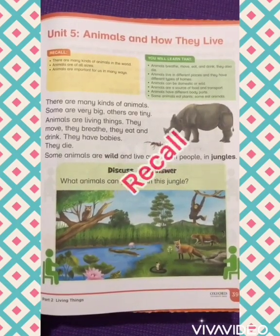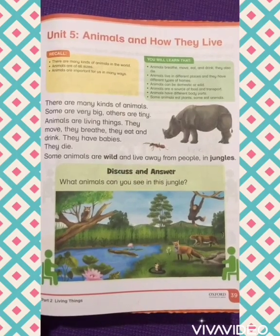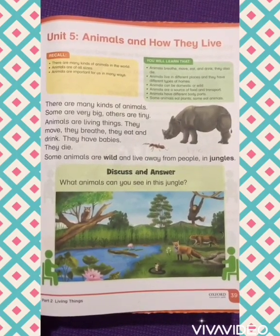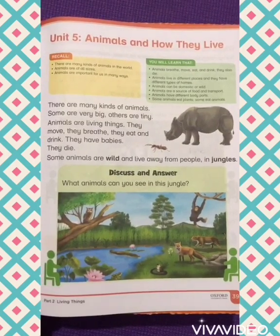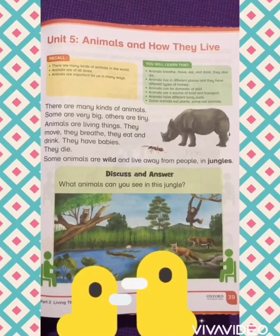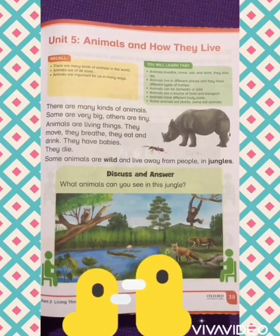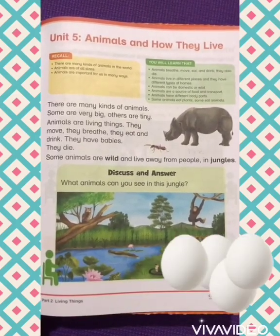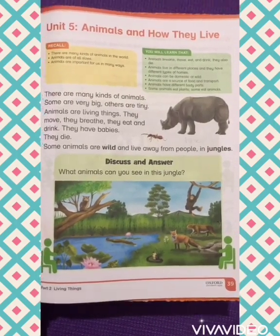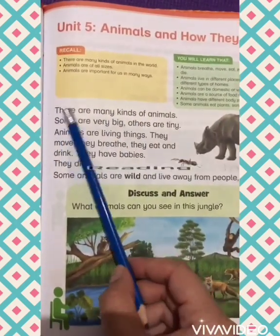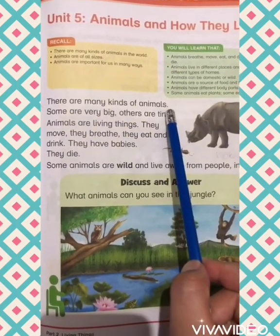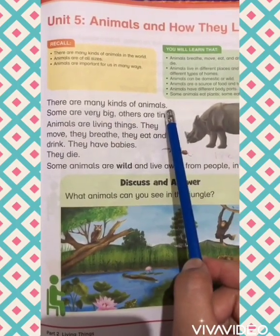There are many kinds of animals in the world. Animals are of all sizes. Animals are important to us in many ways. Just like chickens — they lay eggs and humans eat those eggs. Eggs give us protein and energy. Now let's start reading.